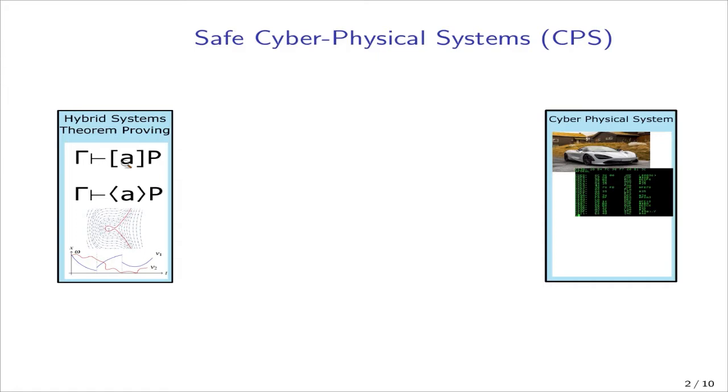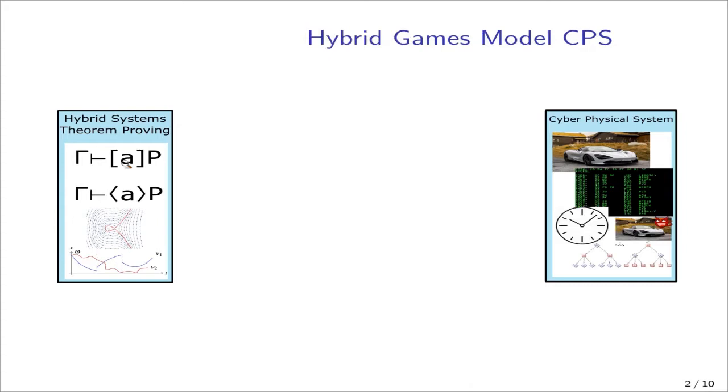Below that, we have pictures of hybrid systems dynamics. So we have continuous dynamics, typically a differential equation. And we also have discrete changes, and we also have non-determinism. The system might describe multiple possible options. However, these cyber-physical systems have some features that are not captured simply by hybrid systems.